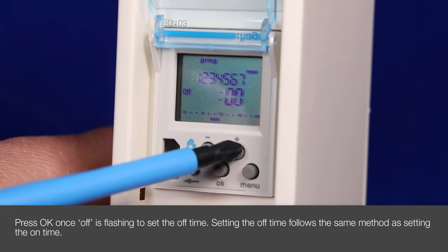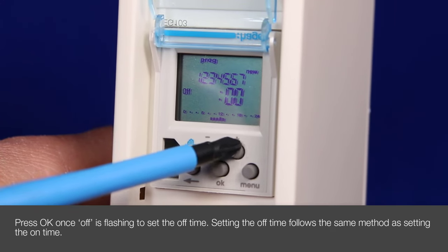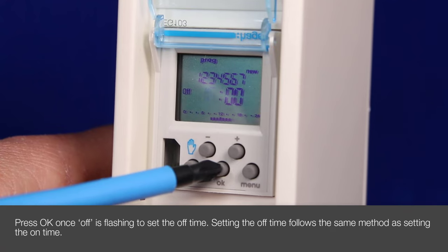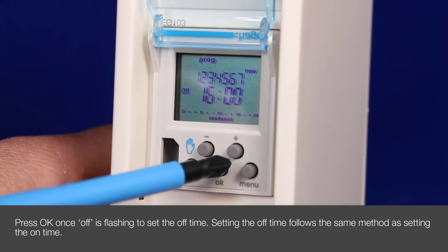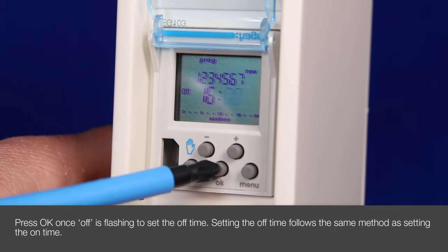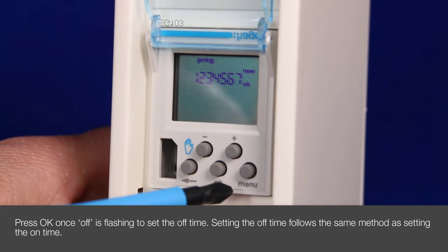Pressing the plus button until we get to 1600 or 4 o'clock in the afternoon is selecting the off time. Saying OK. The minutes start flashing again like before. If we don't want to choose the minutes we just simply say OK.